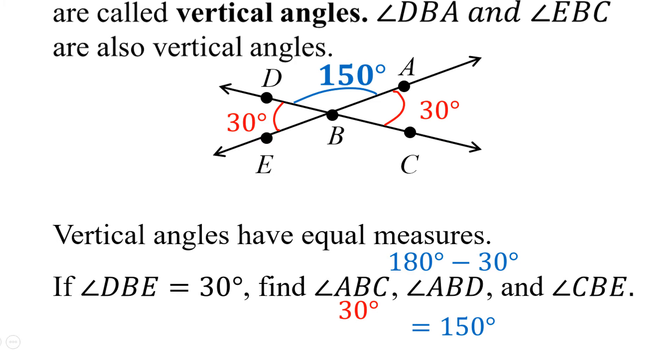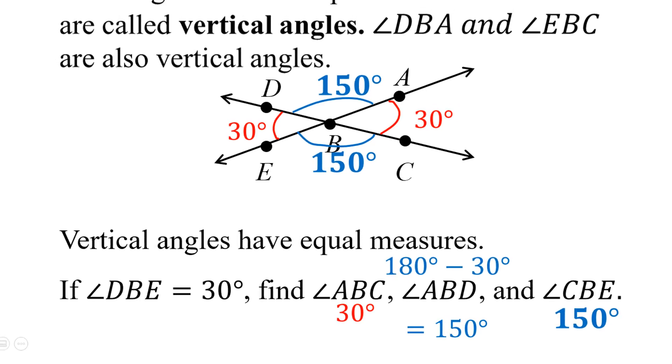Well, if angle DBA is 150 degrees, then we can use vertical angles again to see that angle CBE is also 150 degrees. So we have all four of the angle measures just by knowing one of the angles formed by two intersecting lines.